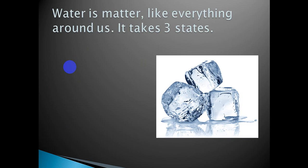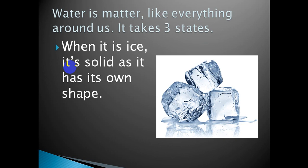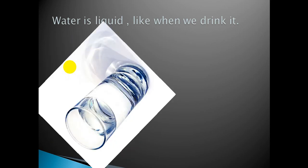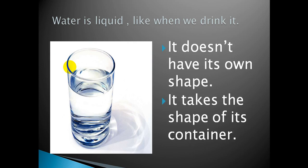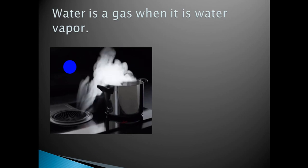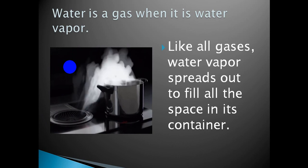Water is matter, and like everything around us, it takes three states. The first state is solid — when it is ice. When you put water in the freezer, it changes to ice, and in this state it has its own shape. The second state is liquid, like when you drink it — it doesn't have its own shape and takes the shape of its container, like this glass. The third state is gas — we call it water vapor. Water vapor is flying out of this pot, and like all gases, it spreads out to fill all the space in its container.